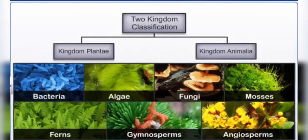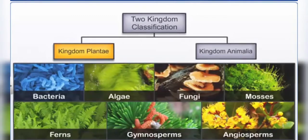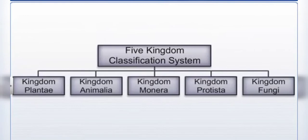Earlier classification systems had included all bacteria, algae, fungi, mosses, ferns, gymnosperms, and angiosperms under the plants category, based on the common feature that each had a cell wall in their cells. The five-kingdom classification rectified this drawback by placing these organisms in different kingdoms based on the differences in their characteristics.